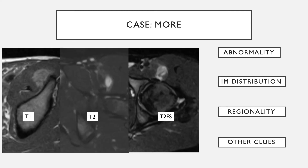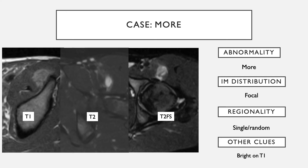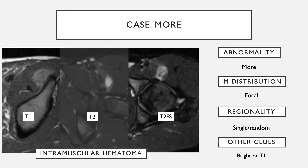Moving to cases with other signal changes: in this case, there is high signal on T1, T2, and T2 fat suppressed images. The intramuscular distribution is focal, not involving the diffuse muscle, and in a random location within the muscle. The T1 brightness makes one think of something proteinaceous, possibly hemorrhage. This is an example of an intramuscular hematoma — which could be associated with a tumor — and one might give intravenous contrast or follow it up. In this case, the patient had a known history of trauma and the finding resolved.